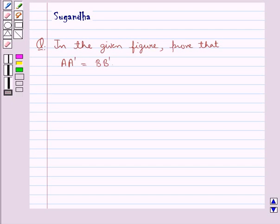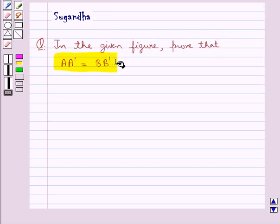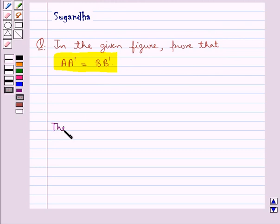Hello and welcome to the session. In this session we discuss the following question which says, in the given figure, prove that AA dash is equal to BB dash.